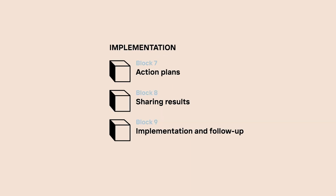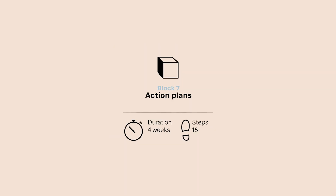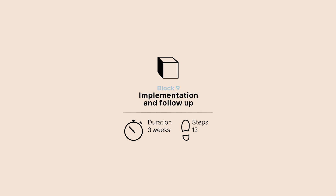Phase 3: Implementation. It includes Block 7, Action Plans — the plan for the public space is set through a participatory process similar to a client-architect meeting. Block 8, Sharing Results — communicates the results with the community, decision-makers, and a wider audience. Block 9, Implementation and Follow-up — gathers feedback on the process from participants, follows up on the implementation, and provides an overall evaluation of the quality of the public space six months after construction.